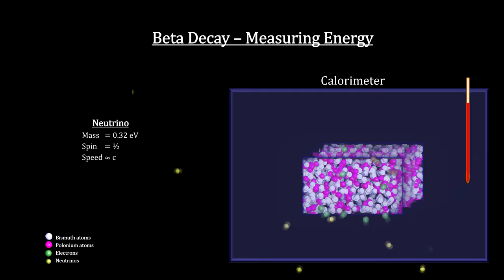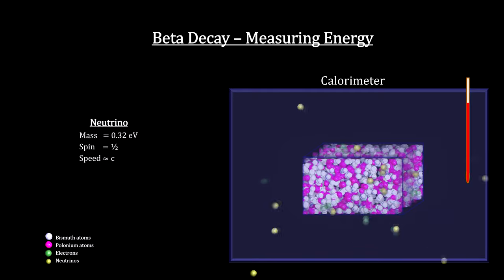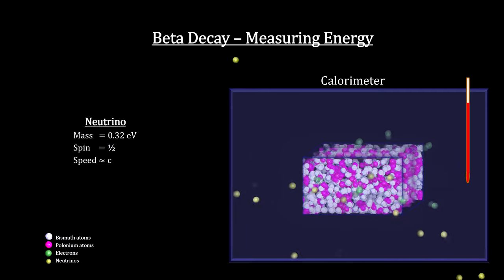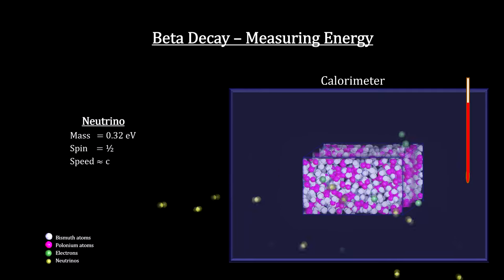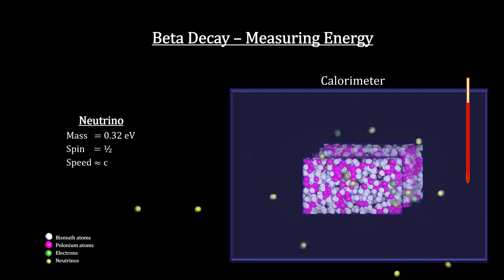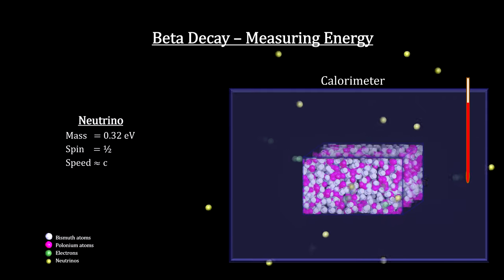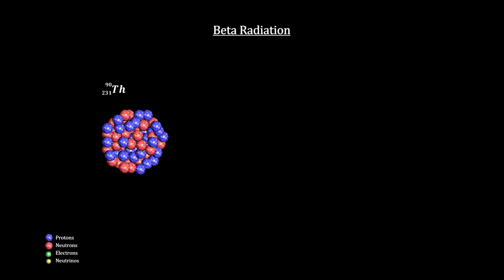The neutrino's predicted mass was around a third of an electron volt. This is over a million times smaller than the electron. Its predicted spin was one-half and its predicted speed was almost the speed of light. This would have beta radiation look like this with both an electron and a neutrino being ejected.